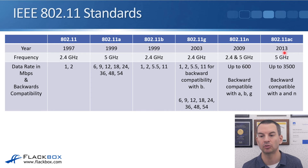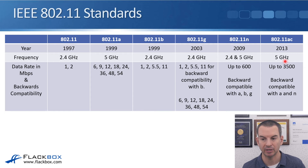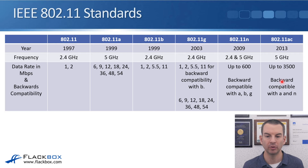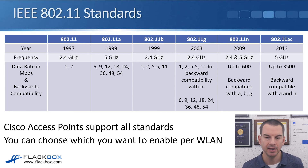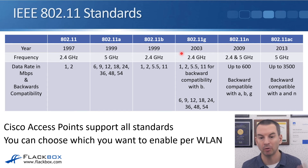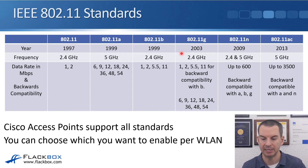Finally, in 2013, 802.11ac came out at 5 GHz, supporting up to 3,500 Mbps. It is backwards compatible with A and N because it's 5 GHz, but not compatible with the older 2.4 GHz-only standards. Cisco access points support all standards — you don't have to pick just one. You can have multiple different options all enabled on the AP at the same time.